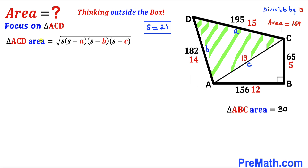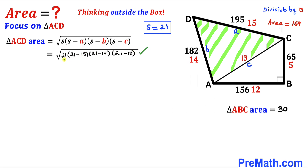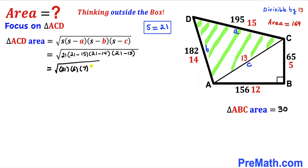Now we fill in Heron's formula with S = 21, a = 15, b = 14, c = 13. Substituting: the square root of 21 × (21 − 15) × (21 − 14) × (21 − 13). This gives us 21 minus 15 = 6, 21 minus 14 = 7, and 21 minus 13 = 8. So we have the square root of 21 × 6 × 7 × 8.